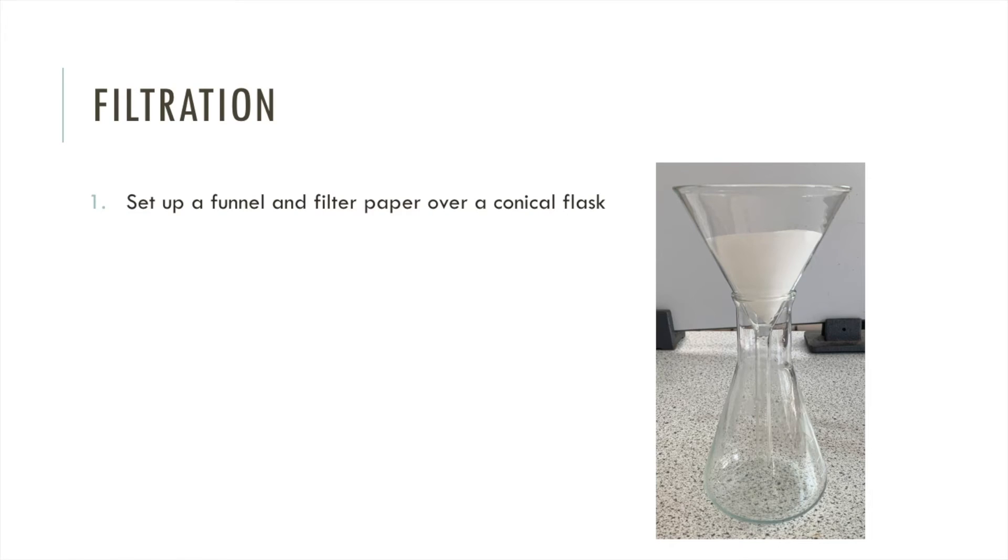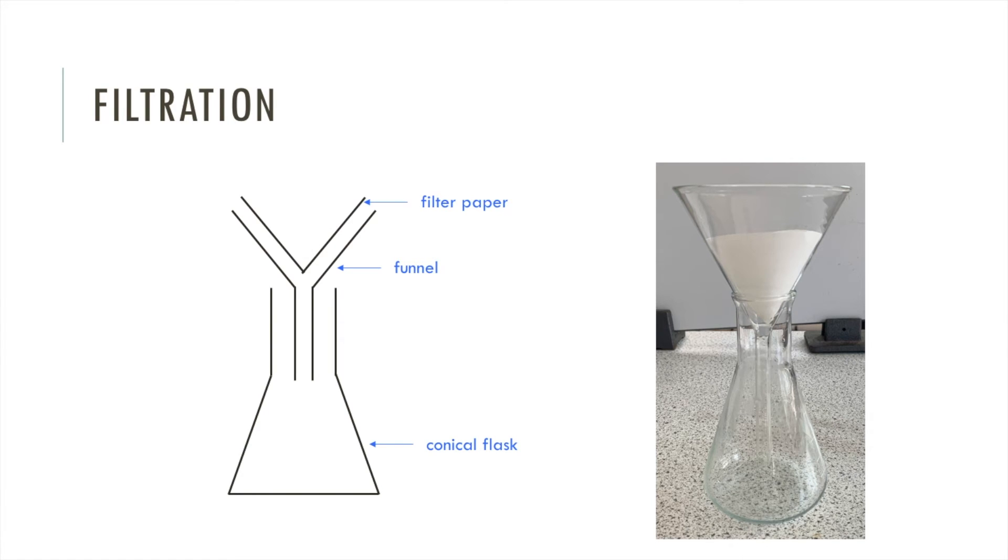What you do is you set up your funnel and filter paper over a conical flask like so. And you filter the contents of the beaker. So you pour what's in the beaker into this setup here. To draw this in an exam, you would draw the conical flask like so. You would draw the funnel in this way, and your filter paper like that. The drawings that you do sometimes look a bit different to real life, but this is how we draw scientific diagrams.